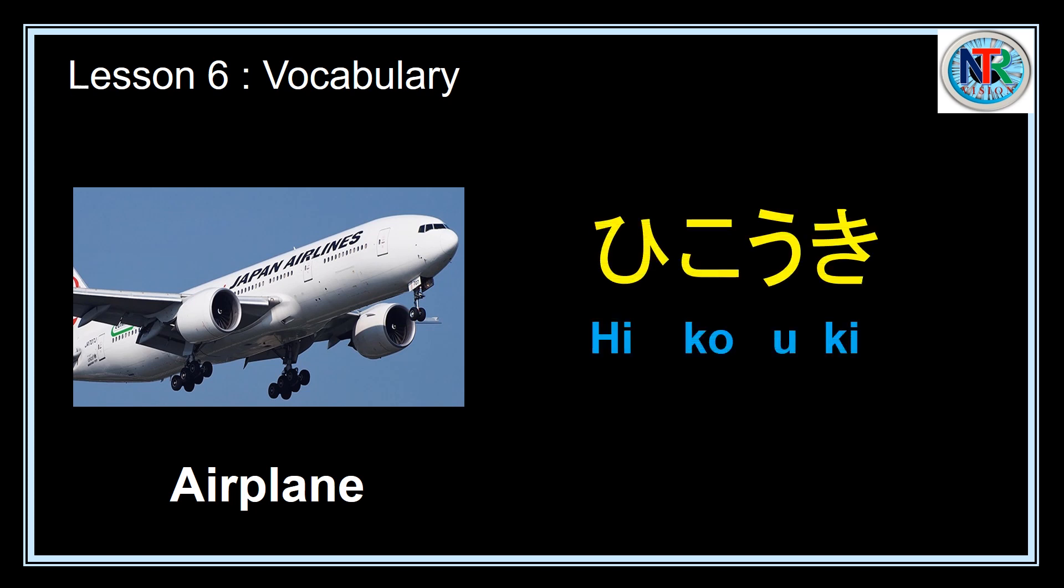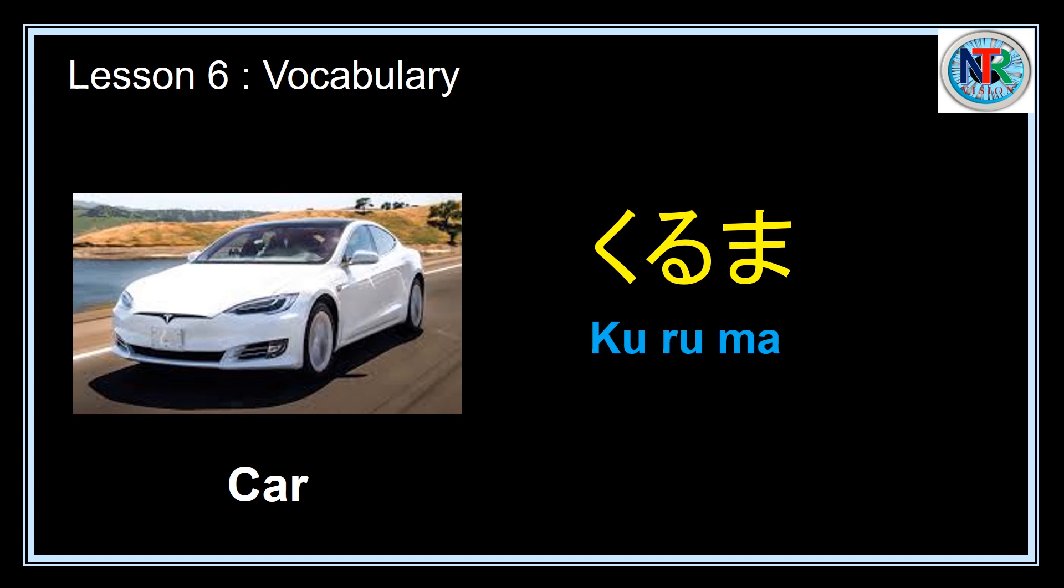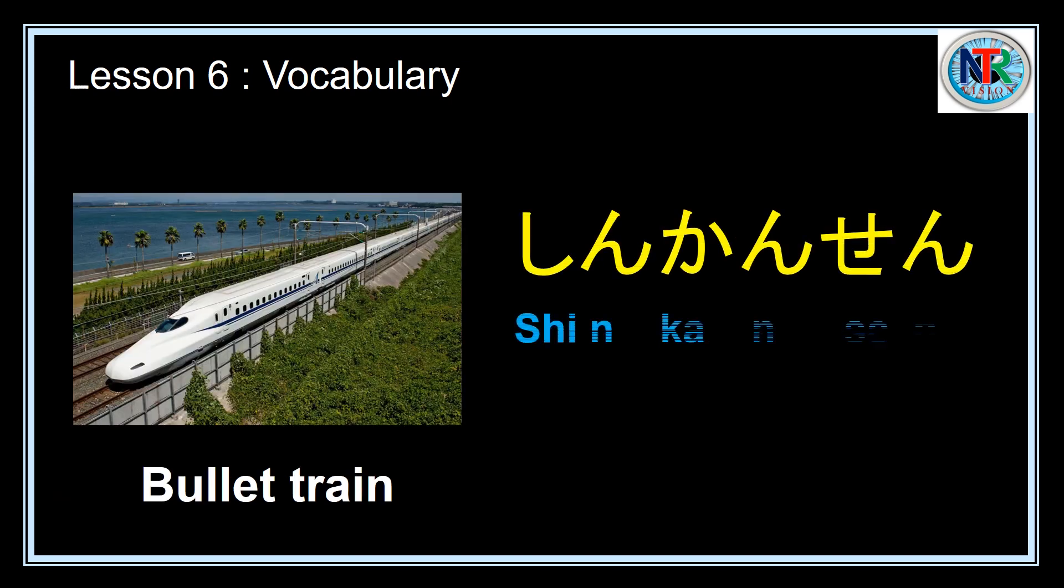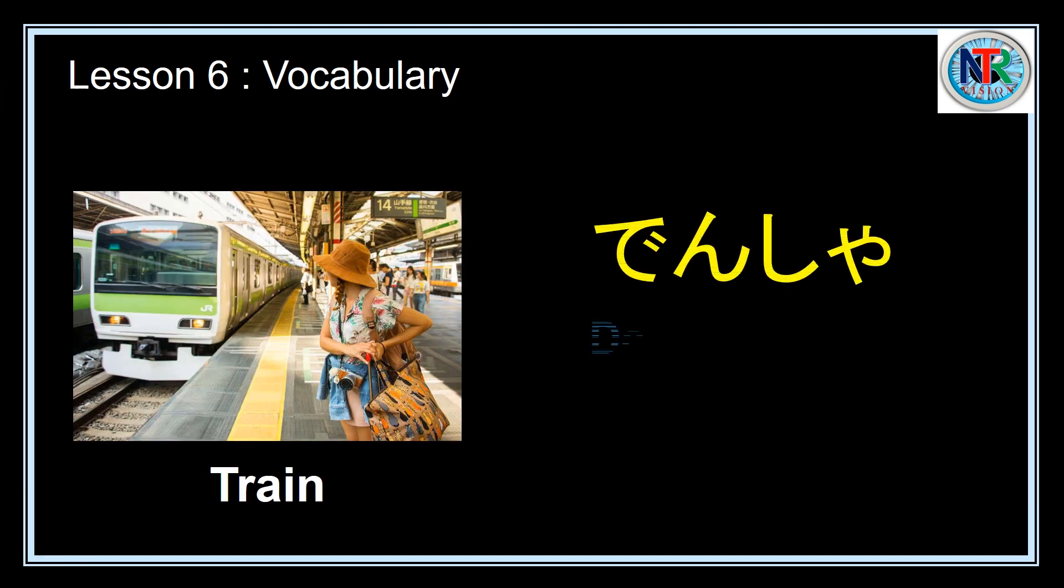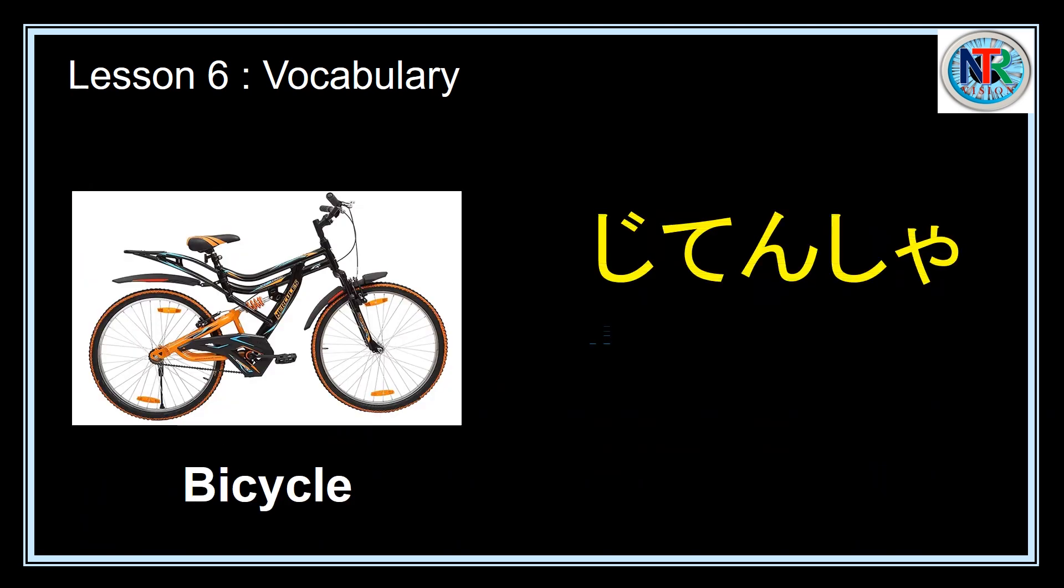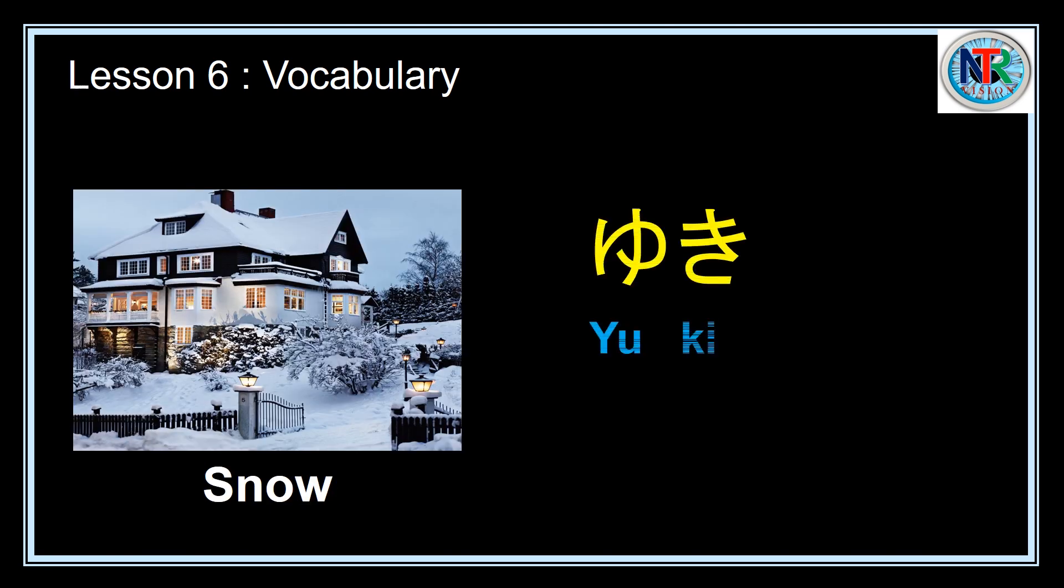When we will make sentence, after vehicle name, we will use de particle. Example: Hikoki de kimashita. Watashi, Hikoki de kimashita. Kuruma de kimashita. Shinkansen de. Densha de kimashita. Jitensha de kimashita.